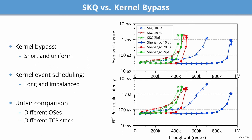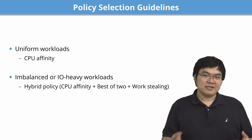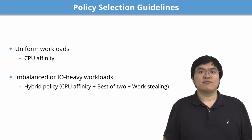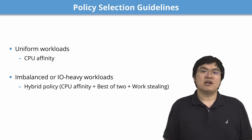Putting the results together, kernel bypass systems such as Shenango excel in workloads with short and uniform request service times, where the primary bottleneck is system call overhead. However, in workloads with slower or imbalanced request service times, the difference between kernel bypass and event scheduling is less significant, as these workloads mask system call overhead and benefit more from event scheduling. Note that the comparison between SKQ and Shenango is inherently unfair due to different OS and networking stacks. Based on our evaluation, we recommend the CPU affinity policy for uniform workloads, and the hybrid policy for imbalanced or tail-heavy workloads.